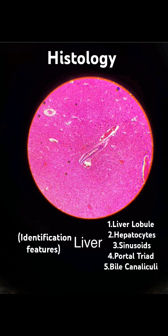Liver lobule: 1. Hexagonal shape. 2. Central vein, terminal hepatic venule. 3. Portal triad — hepatic artery, portal vein, and bile duct. 4. Hepatocytes, liver cells, arranged in cords.